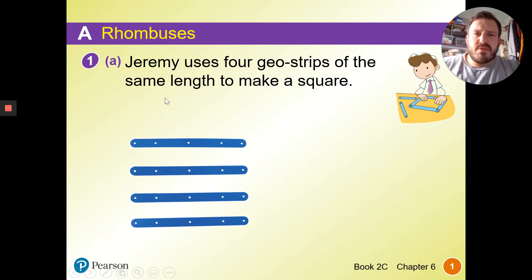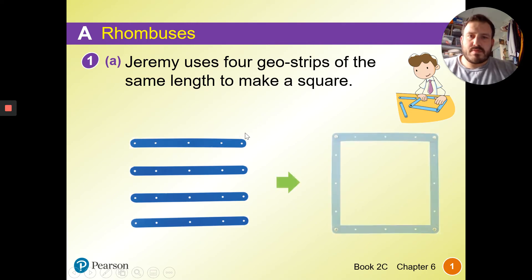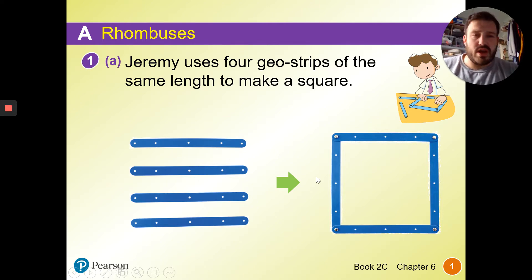Jeremy uses geostrips. These geostrips are like pieces of card with multiple holes on. They're of the same length and he makes a square. Nice and easy. He's put a pin in each corner and all four sides are equal length, so it's a square.